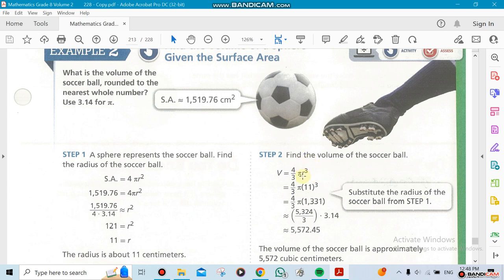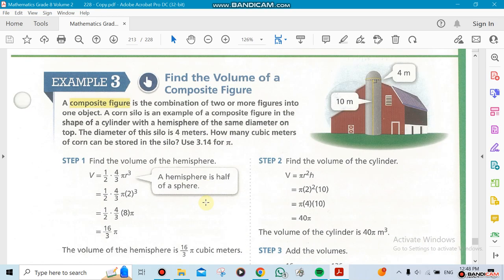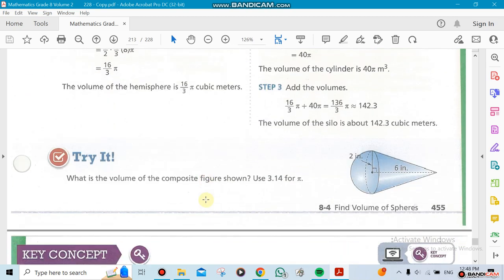The volume will be 4 over 3 pi r cubed, because now we're talking about volume so it has to be a power 3. And I'll show you how we could do a combination of two things. We could have a cone with a half a sphere on top of it.